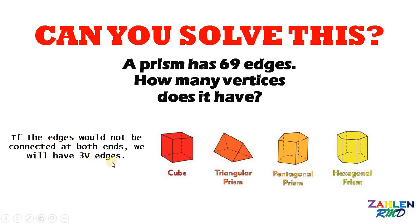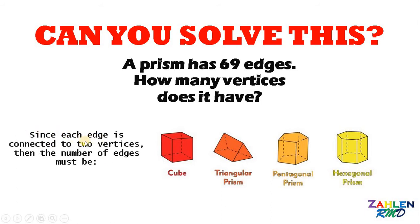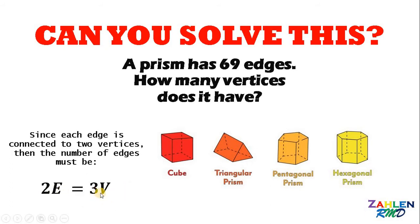If the edges were not connected at both ends, we would have 3V edges, where V is the number of vertices. But since each edge is connected to two vertices, the number of edges must be 3V over 2. If we multiply both sides by 2, we get the equation 2E = 3V, where E is the number of edges and V is the number of vertices.